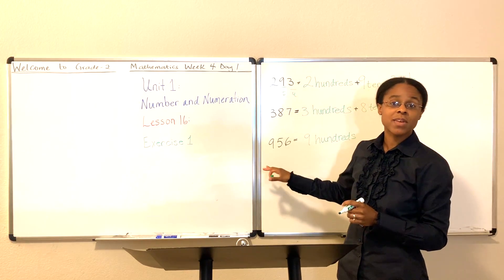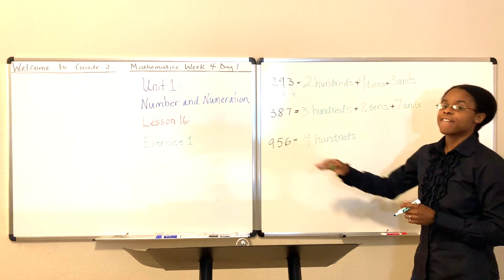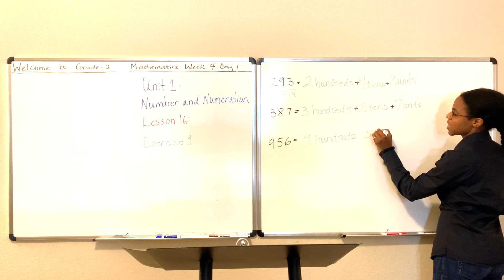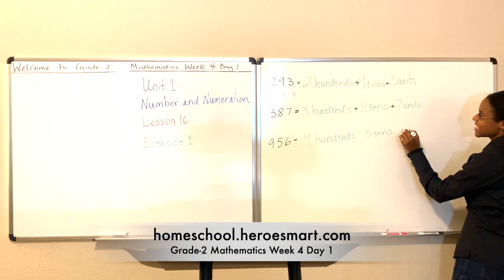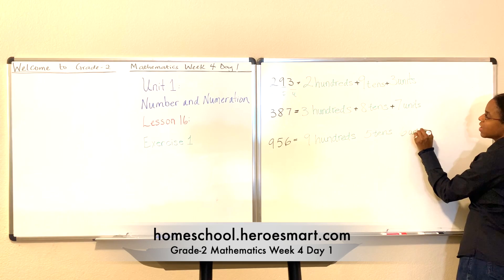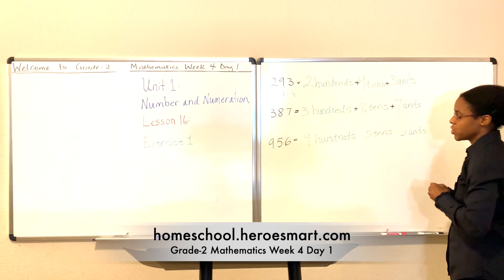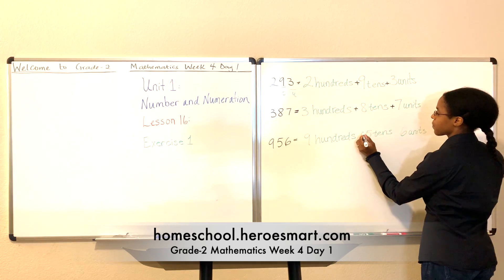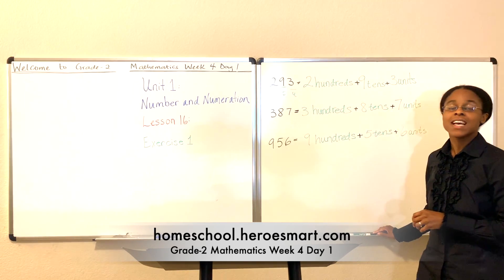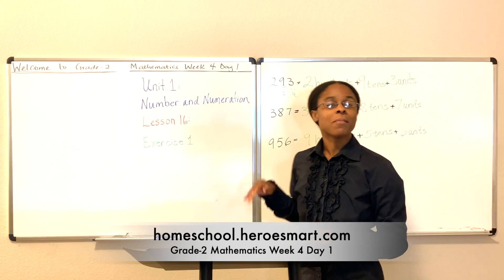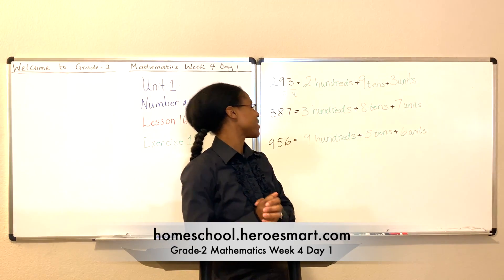Okay, how many tens do we have in this number? We have five tens. I'm hoping this is becoming easier for you as you practice. And how many units do we have? We have six units. Good job. So let's put our addition sign in between all of these numbers. And there you have it. Nine hundred fifty-six is equal to nine hundreds plus five tens plus six units.